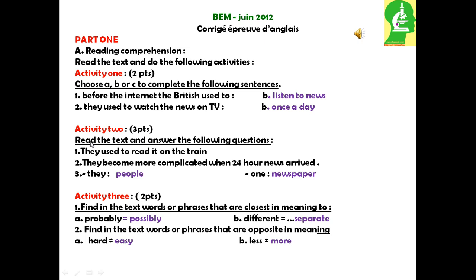Activity 2: Read the text and answer the following questions. 1. They used to read it on the train. 2. They became more complicated when 24-hour news arrived. 3. They refer to people. 1. Refers to newspaper.